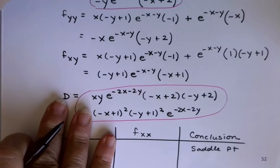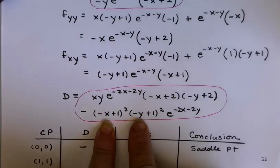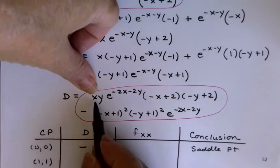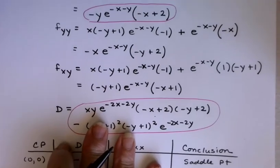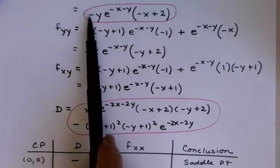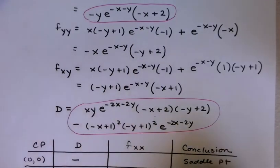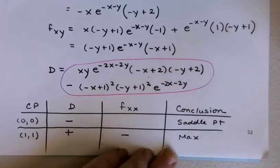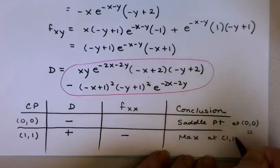What about at (1,1)? At (1,1), plugging in the 1's for x and y gives multipliers of 0 in the second term, so that's all gone. Everything remaining is positive, positive, positive — so D is positive. As for f_xx at (1,1): we'd have a negative out front and then positive, positive, positive, so the minus sign carries and makes f_xx negative overall. Positive D, negative f_xx gives a maximum.